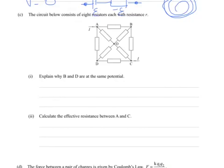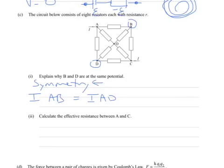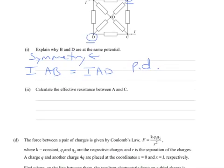Part C. The circuit below consists of eight resistors with resistance R. Explain why B and D are the same potential. So there's B, there's D. You can talk about symmetry again. And you might like to mention current flow. Because the paths are identical, which is your symmetry, the current flow from A to B is the same as the current flow from A to D. If the current flow is the same and the resistors are the same, that means the potential difference across each resistor is the same, which means the energy potential at D and at B has to be the same.